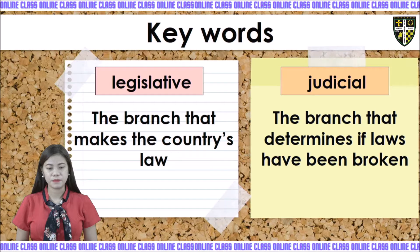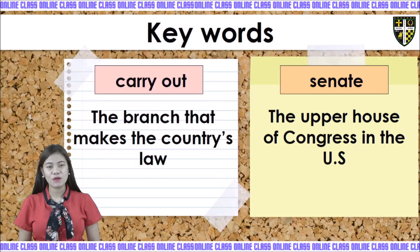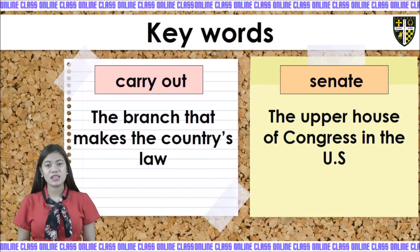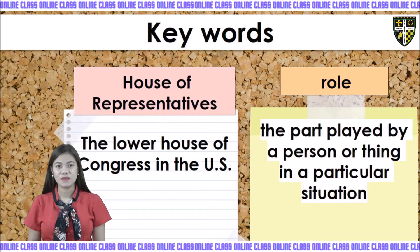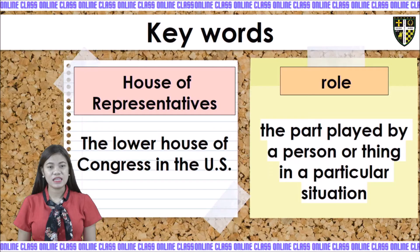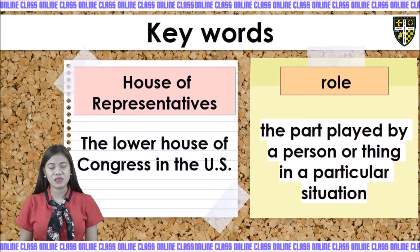Next we have carry out. Next we have senate — it is the upper house of Congress in the U.S. Next we have house of representatives — it is the lower house of Congress in the U.S. While role, it is the part played by a person or thing in a particular situation.